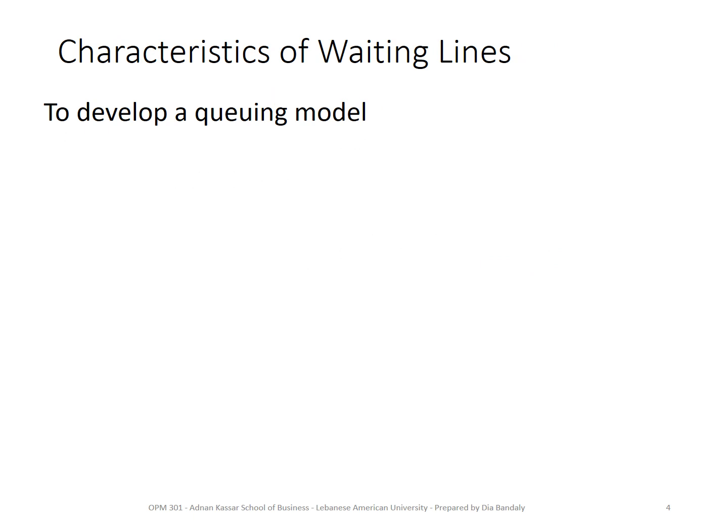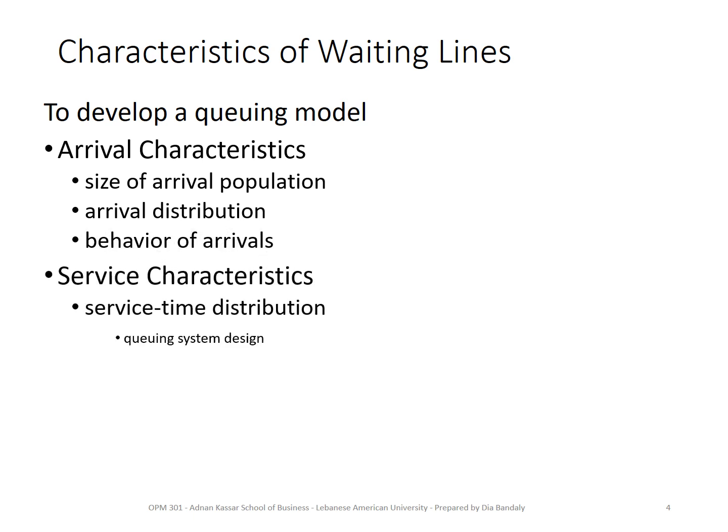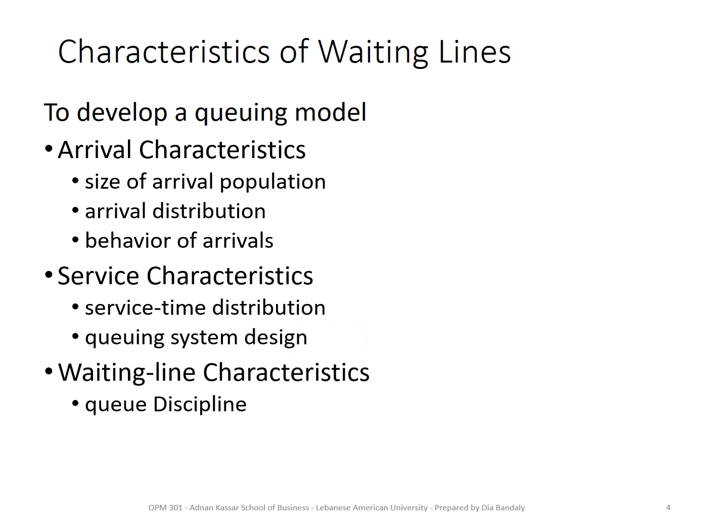To develop a queuing model — and in this introductory course we are using models rather than developing them — we need three pieces of information: arrival characteristics, service characteristics, and waiting line characteristics. We will discuss each of these categories in detail.